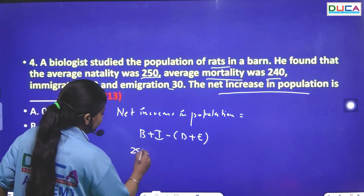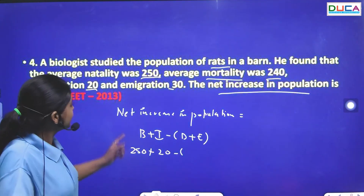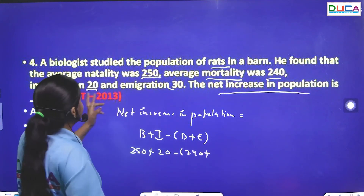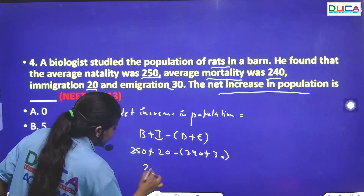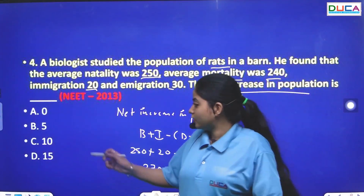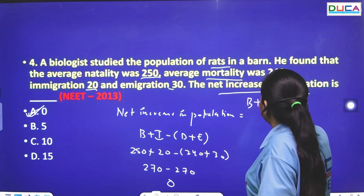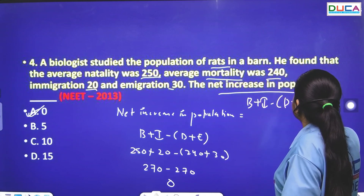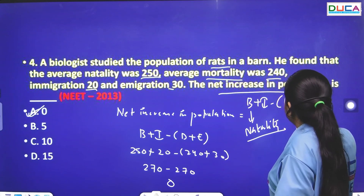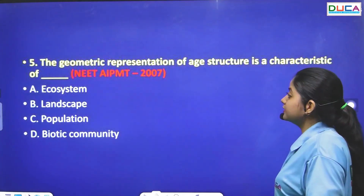The natality is 250, immigration is 20, mortality is 240, and emigration is 30. Calculating: 270 minus 270 equals 0. So the net increase in population is 0. The formula is birth rate plus immigration minus death rate minus emigration.